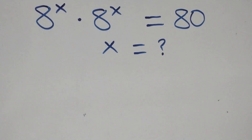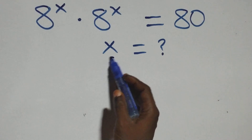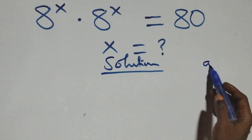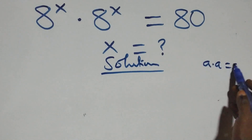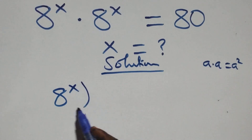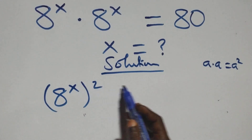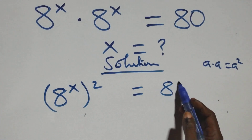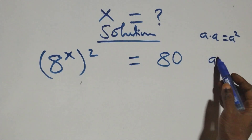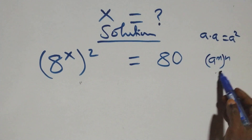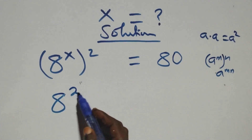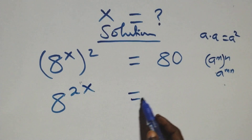Hello, you are welcome. How to solve this nice exponential equation. What we have here: a times a is the same as a squared. Multiplying here, we have a raised to power x, squared, equals 8^(2x). This follows when a raised to power m, raised to power n, is the same as a raised to power mn — so the power multiplies, giving us 8 raised to power 2x equals 80.